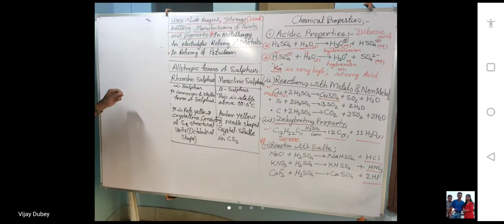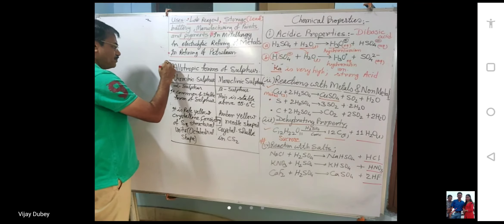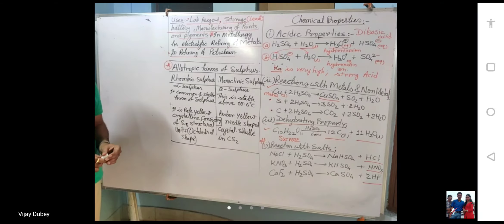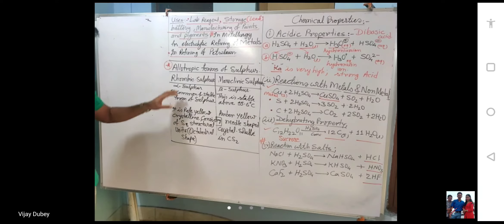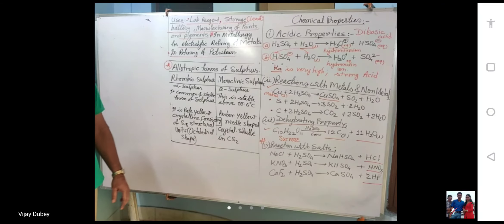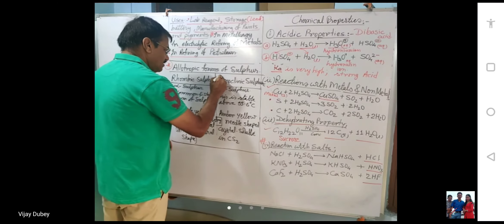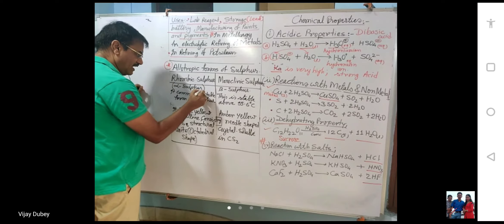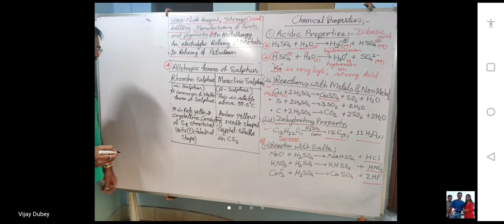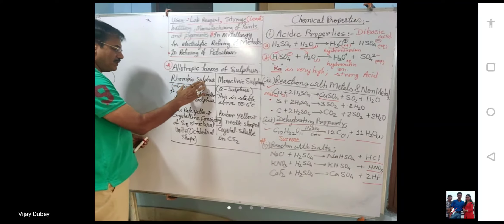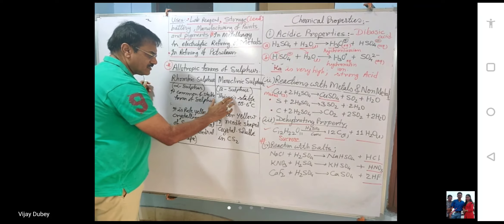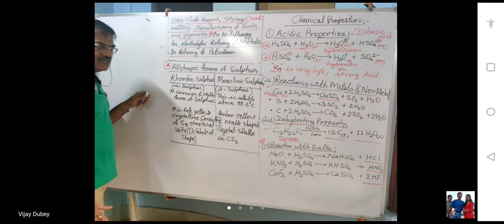Those are the important applications of sulfuric acid. Next is allotropic forms of sulfur. There are two types: rhombic sulfur (also called alpha sulfur) and monoclinic sulfur (also called beta sulfur). Rhombic sulfur is the common and stable form, whereas monoclinic sulfur is stable above 95.6 degrees centigrade.